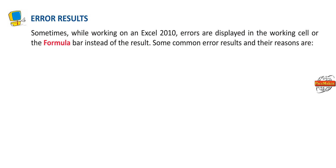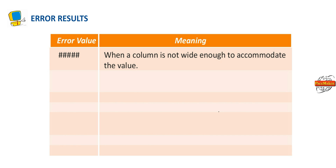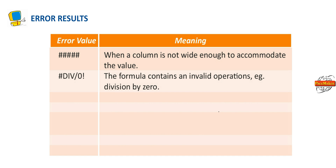Error results: Sometimes, while working on Excel 2010, errors are displayed in the working cell or the formula bar instead of the result. Some common error results and their reasons are: ##### — when a column is not wide enough to accommodate the value.